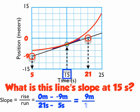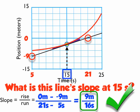So the slope is positive nine meters over 16 seconds. So that's the slope of the tangent line. And since the tangent line is parallel to the curve at that one point, as I showed earlier, it's also the slope of the curve at that one instant in time, at 15 seconds.